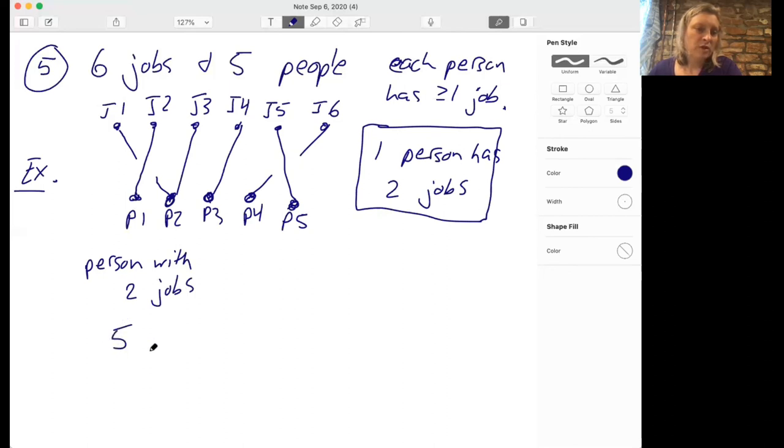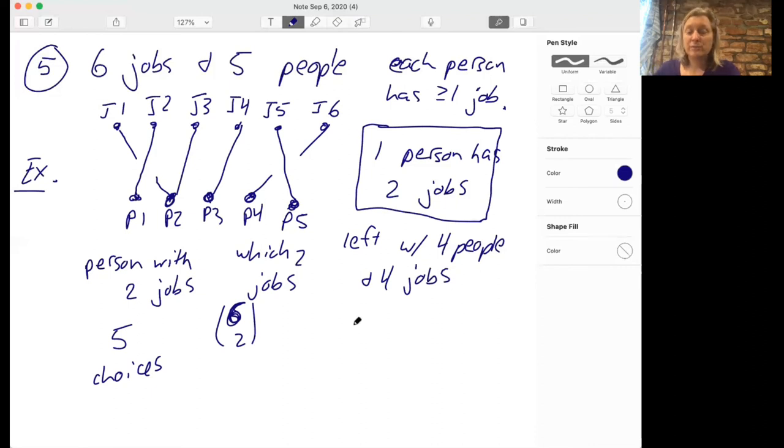So the first question is who's the unlucky or lucky depending on your point of view person. So we have the person with two jobs. And so for that we have five choices. And then we can ask which two jobs do they have? So that's six choose two because there are six jobs. And then what are we left with? We're left with four people and four jobs. Each person has to have then exactly one job. And so then we just need to line up the people with the jobs. And so there are 4 factorial ways of permuting people and jobs. So here we're left with 5 times 6 factorial over 2 factorial times 2 factorial times 4 factorial, which simplifies to 5 times 6 factorial over 2.